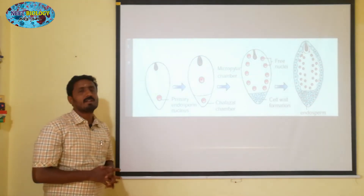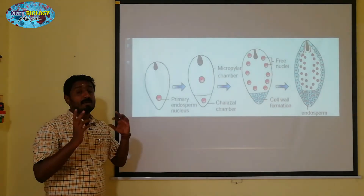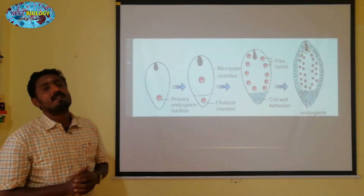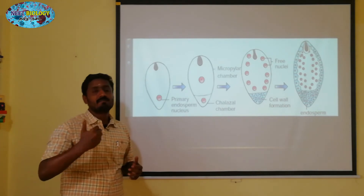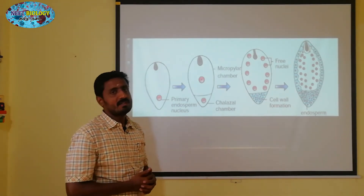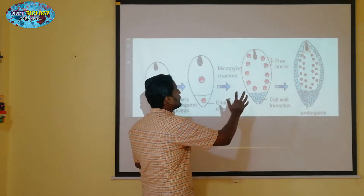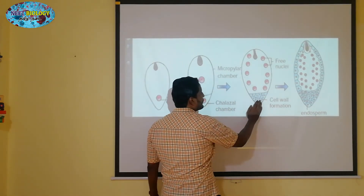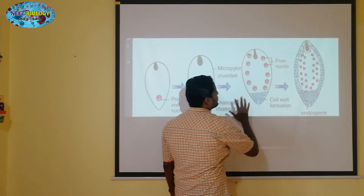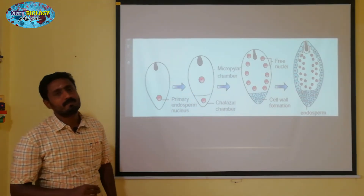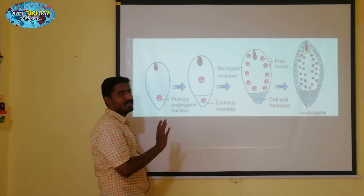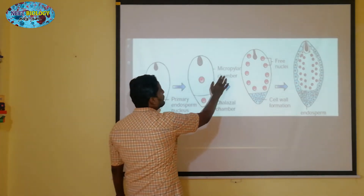The whole endosperm can result in two types of endosperm. Nuclear endosperm and cellular endosperm are both present in this. So the two endosperm types are seen here.